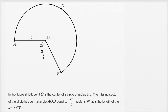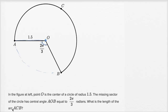In the figure at left, point O is the center of a circle of radius 1.5. We see that right over there. The missing sector of the circle has central angle AOB equal to two pi over three radians. That's this right over here, and that's the central angle for the missing sector right over there. What is the length of arc ACB? Now ACB is this arc — it's kind of the rest of the circle, the part that's not missing.